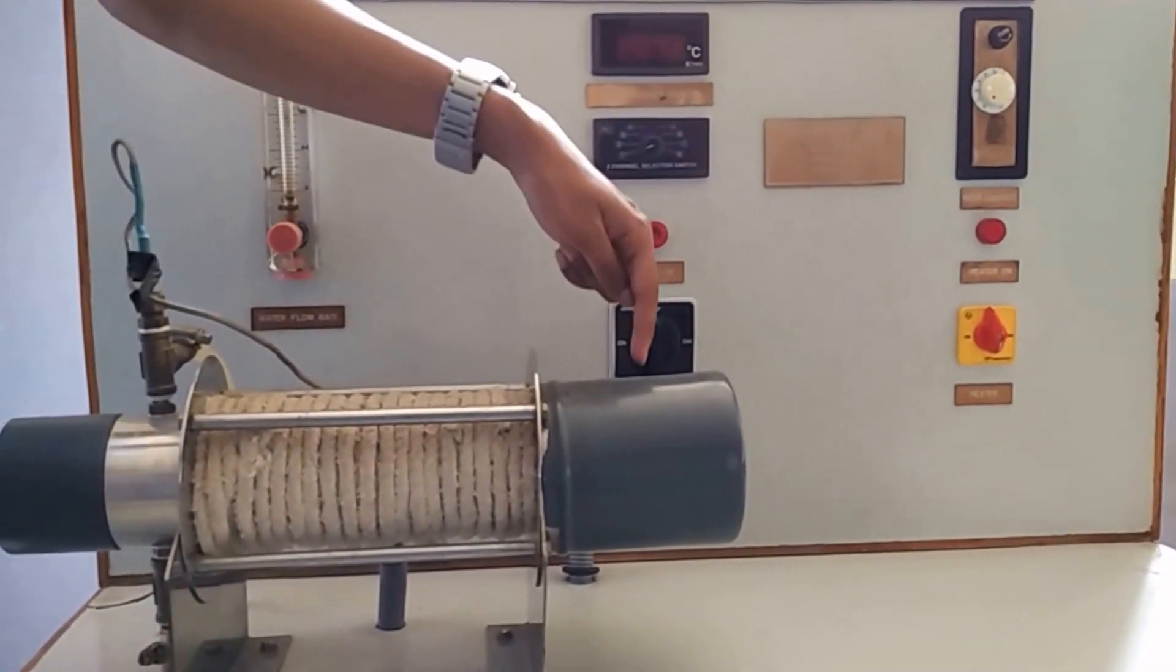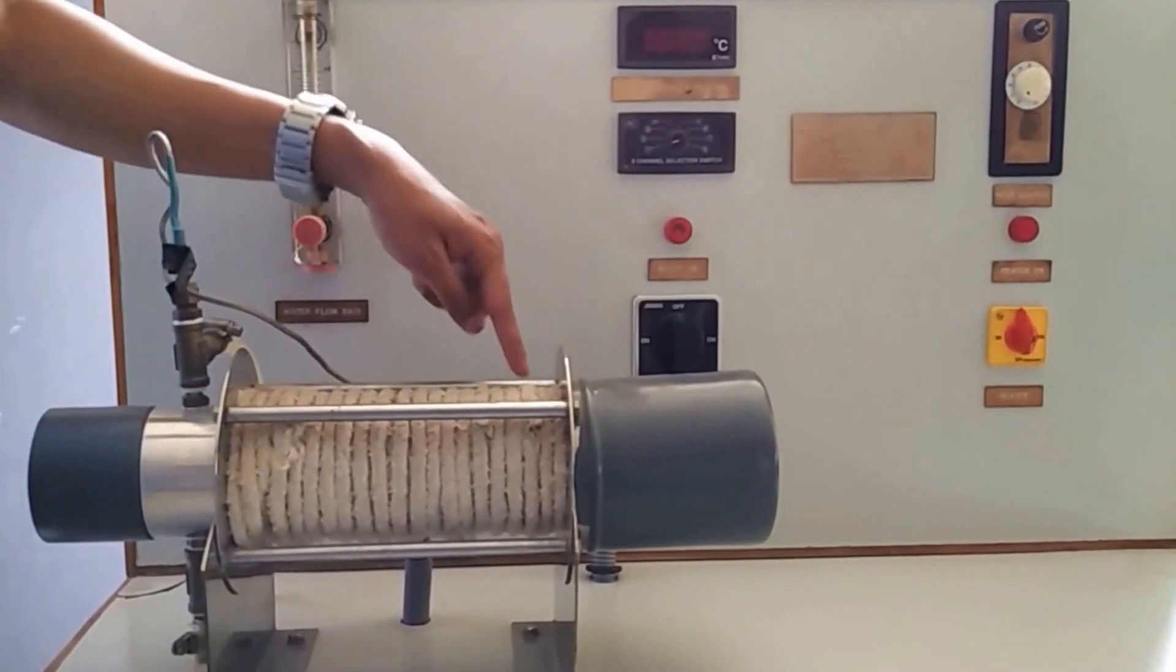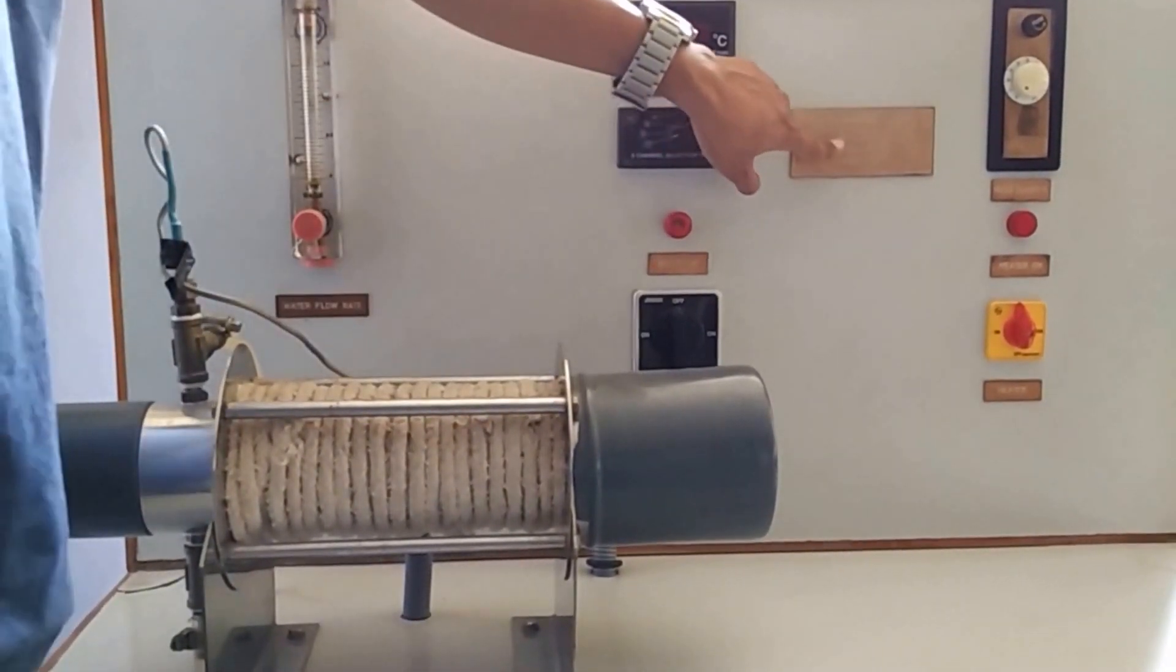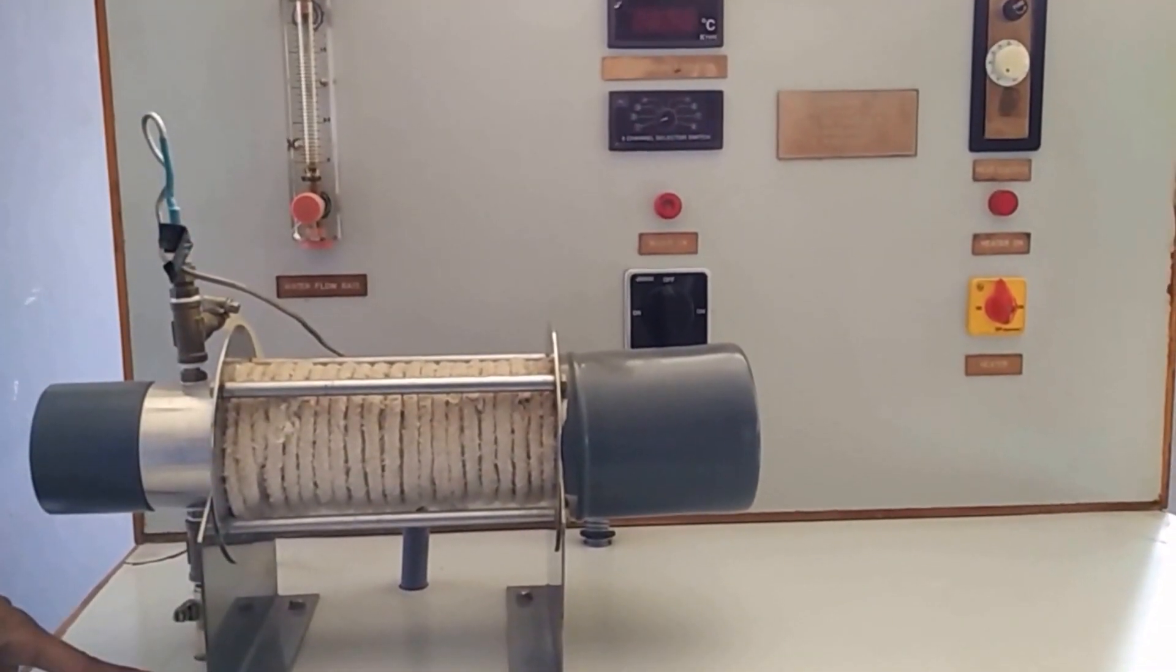First, this is where the heater is situated. Inside this we have the heating coil, and on this surface we have 4 thermocouples. Here is the inlet temperature of water and outlet temperature of water.